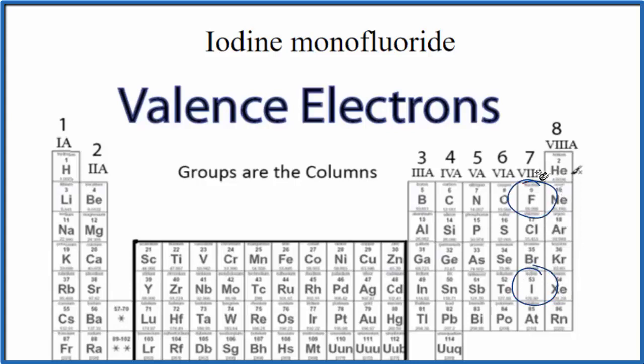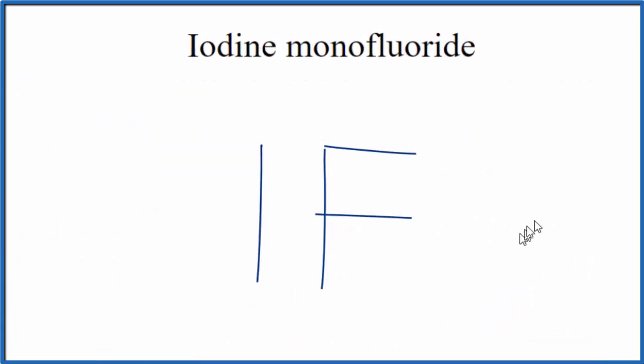They're in group 17, sometimes called 7A, so they have 7 valence electrons. Each one has 7 valence electrons. Let's go back and count those up. So 7 plus 7, that'll give us 14 total valence electrons for the I-F Lewis structure.